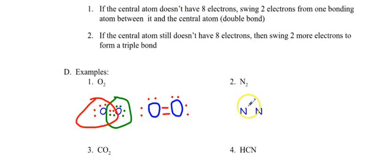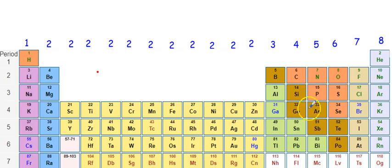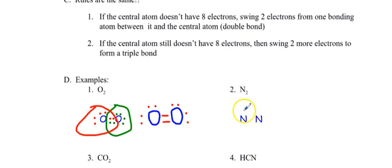Now let's do the same thing for nitrogen. Nitrogen has five valence electrons. I'll draw five electrons on the left nitrogen and five on the right nitrogen. Let's count how many each nitrogen is claiming: two, four, five, six. So each nitrogen only has six electrons — not good. We need eight.